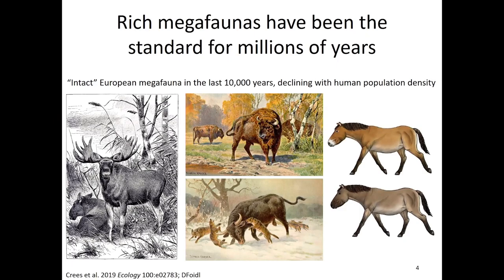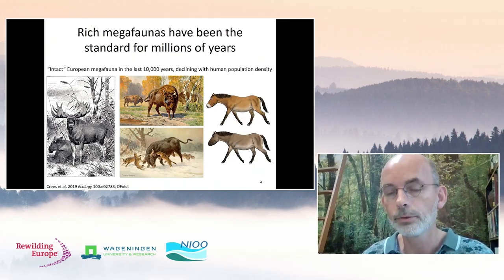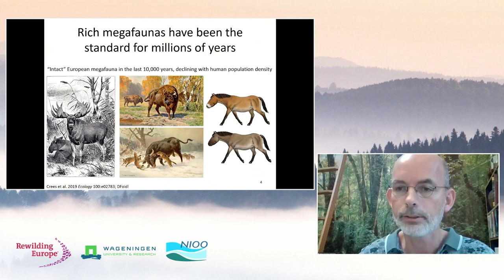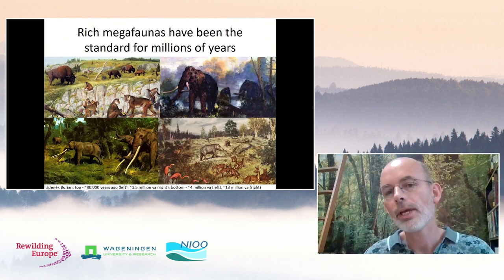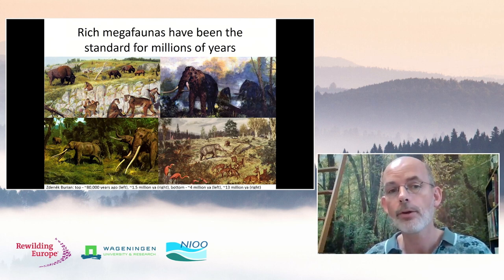Conversely, if we look historically, rich megafaunas have really been the standard all across Europe — in different climates, different ecosystems, different landscape settings — for millions of years. Some of the really large megafauna shown here: elk or moose, bison, aurochs, and horse — have been very common and widespread in Europe until a few thousand years back, declining strongly in response to rising human population density. Looking further back, we see that functionally super-diverse megafaunas have really been the norm.